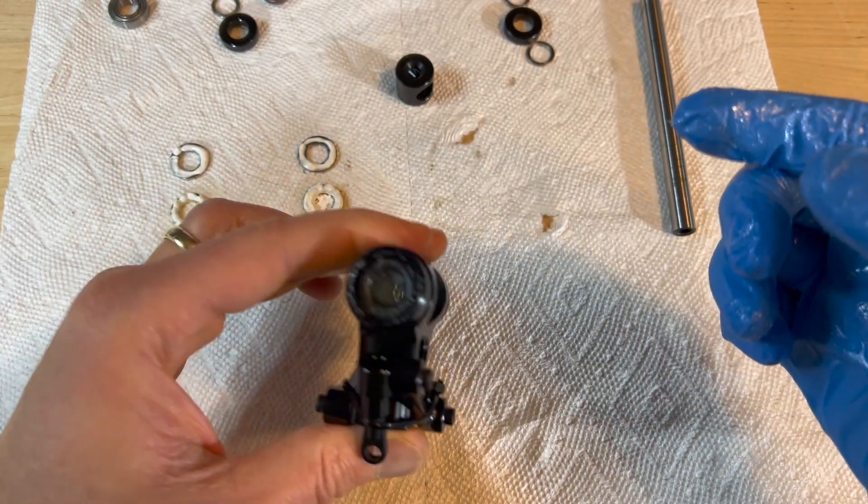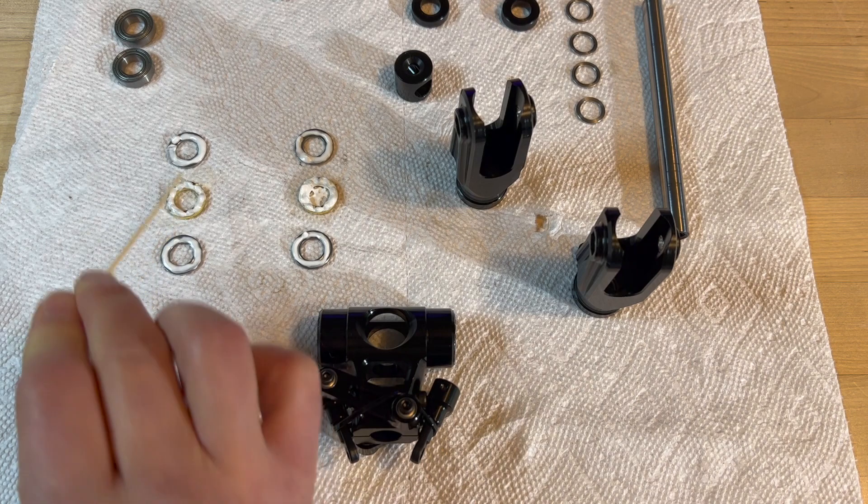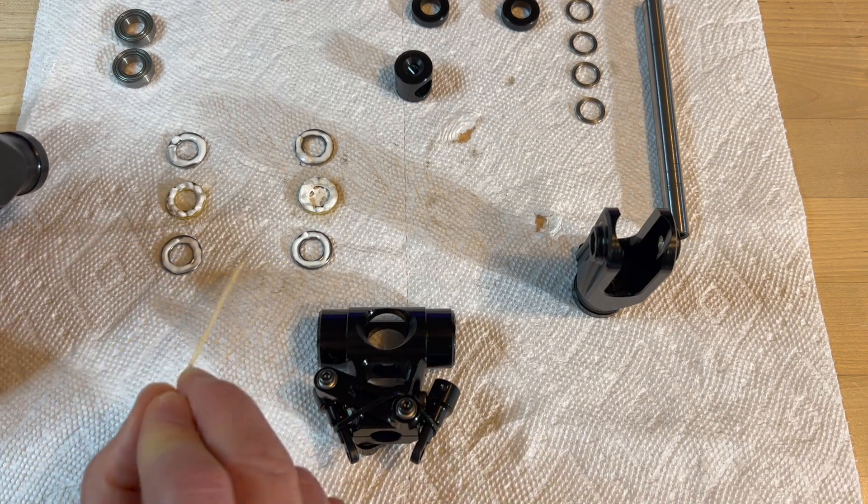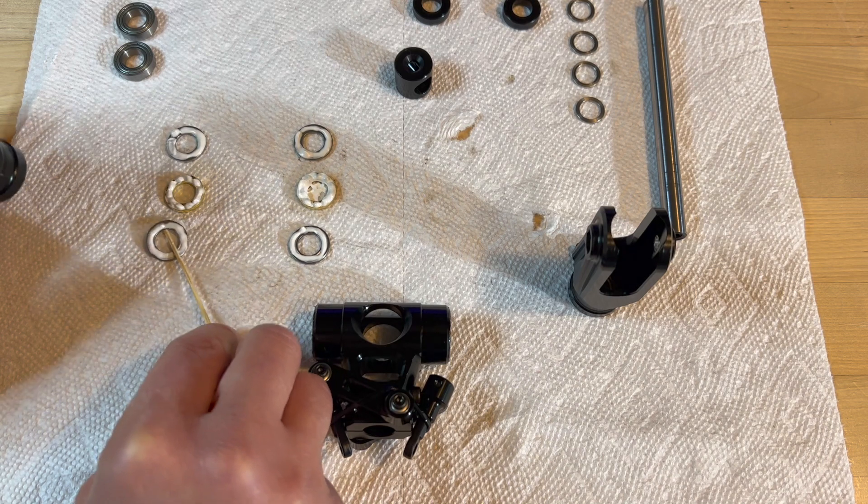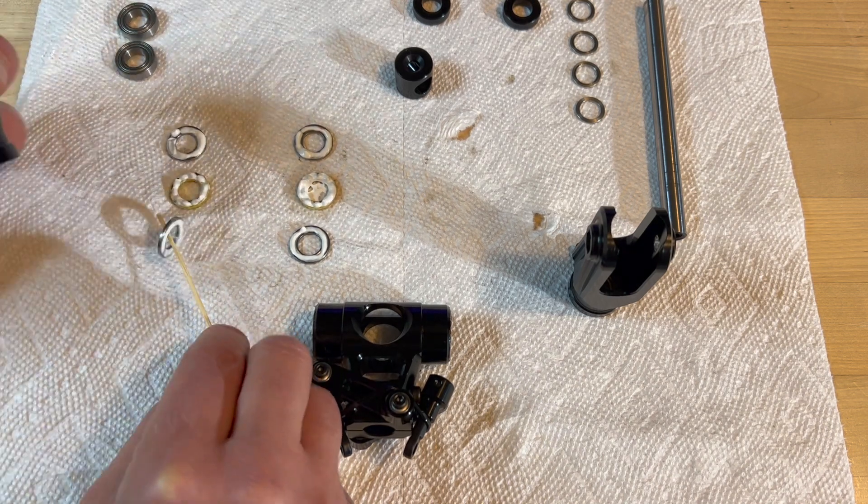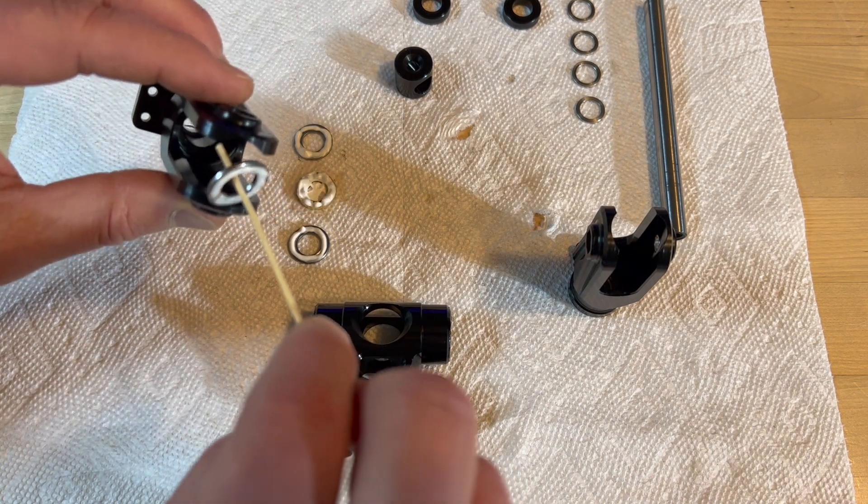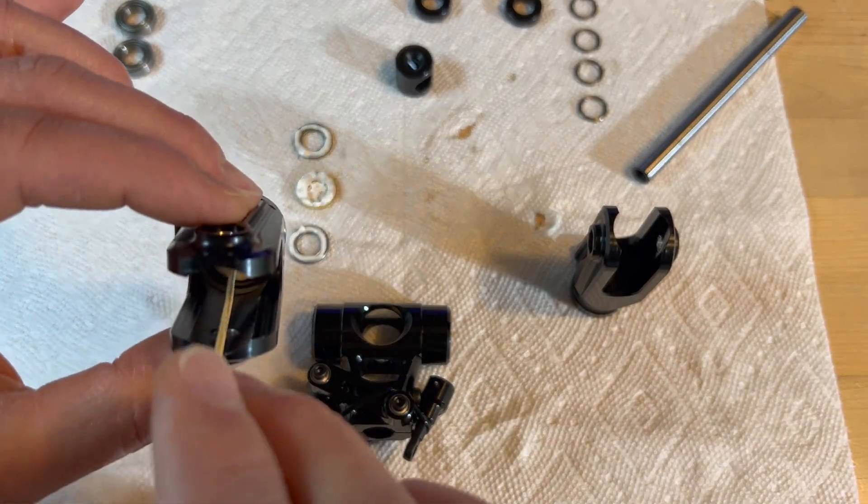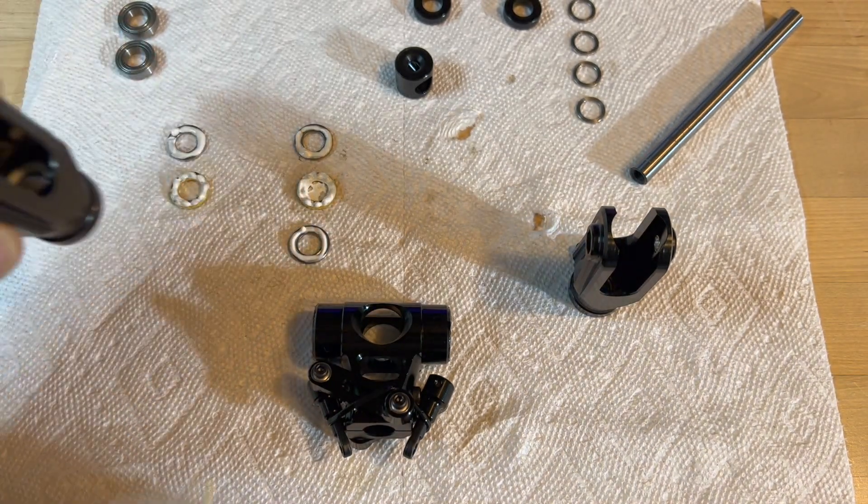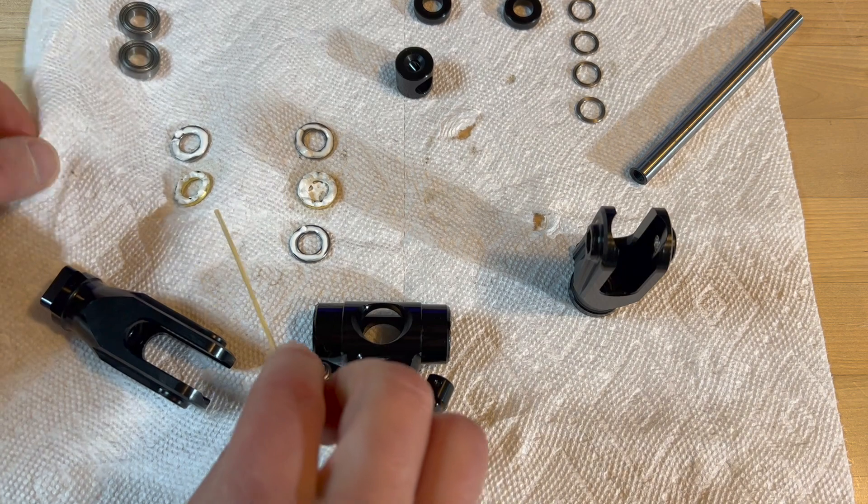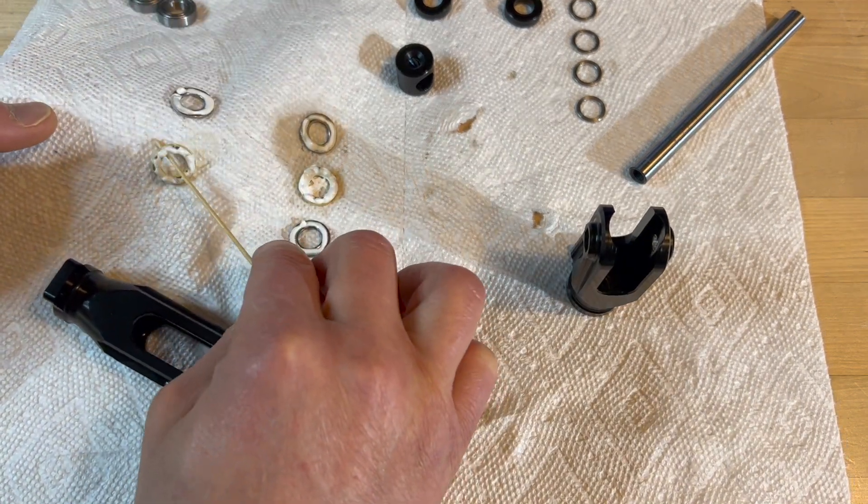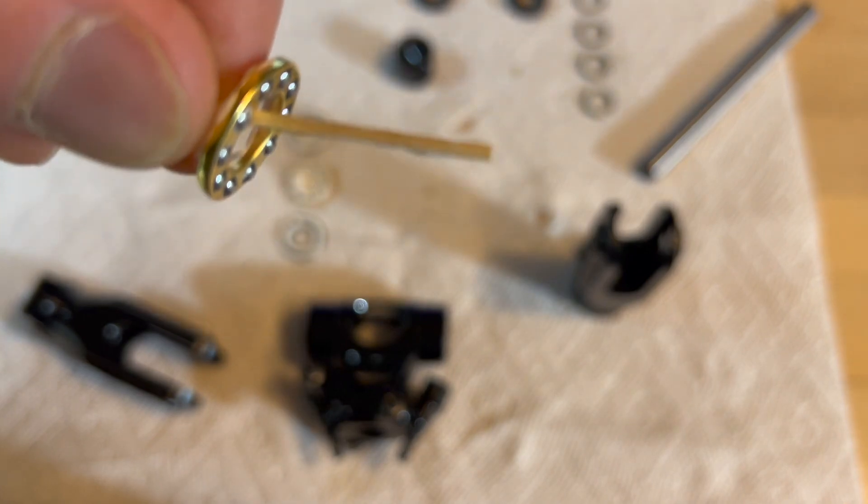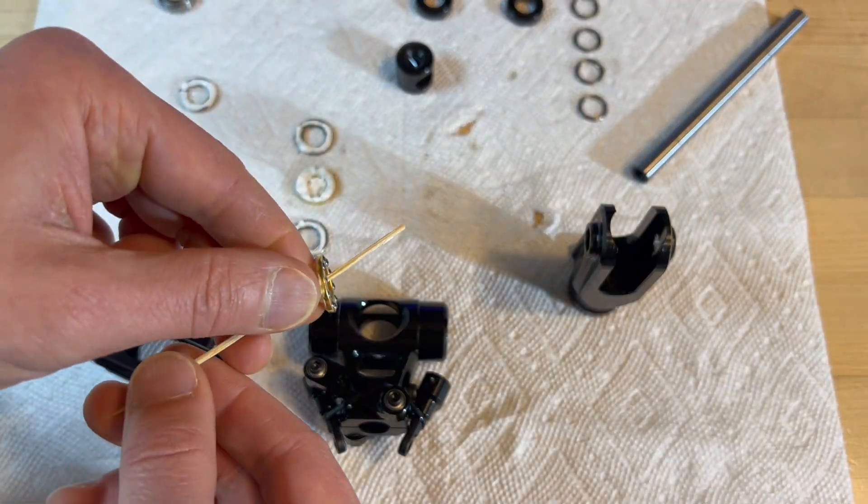I'm going to insert the thrust bearings onto the blade grip. These two here are the large inner diameter thrust bearings so I'm going to insert them first. I'm very finicky about touching grease with my hands so I'm actually going to use a wooden skewer like you get at your favorite grocery store. Now that I inserted the large inner diameter race onto the blade grip, I'm going to insert the actual ball bearings.